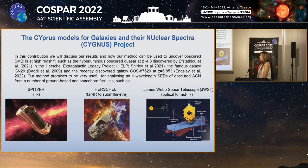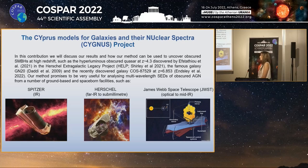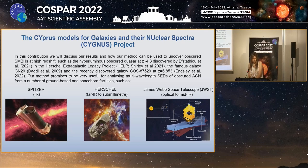Our project is named Cygnus, which stands for Cyprus Models for Galaxies and their Nuclear Spectra, and this project is funded by ESA. Within the Cygnus project, we are developing a new MCMC SED fitting code. We will discuss how we can use our methods to uncover obscured AGN at high redshift, such as the hyperluminous obscured quasar at a redshift of 4.3 studied by HELP, the famous galaxy GN-20, and the recently discovered galaxy COS87-529 at a redshift of 6.853. Our method promises to be very useful for analyzing multi-wavelength SEDs of obscured supermassive black holes from both ground-based and space-based facilities, such as Spitzer, Herschel, and the James Webb Space Telescope.